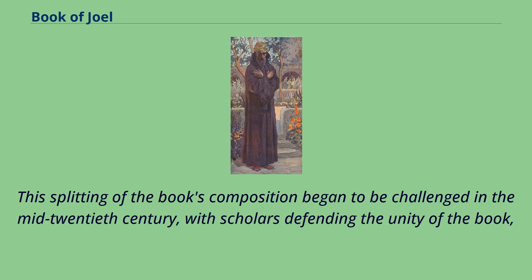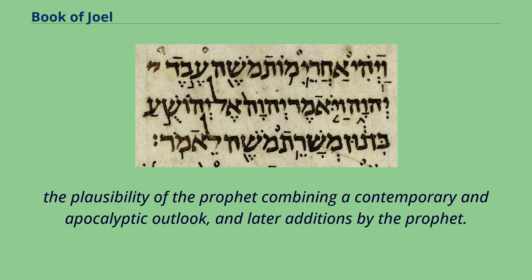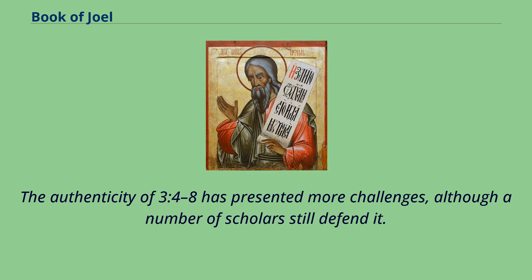This splitting of the book's composition began to be challenged in the mid-20th century, with scholars defending the unity of the book, citing the plausibility of the prophet combining a contemporary and apocalyptic outlook, and later additions by the prophet himself. The authenticity of 3:4–8 has presented more challenges, although a number of scholars still defend it.